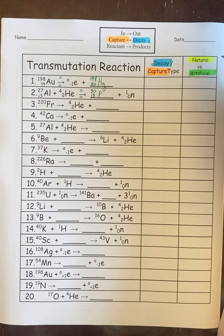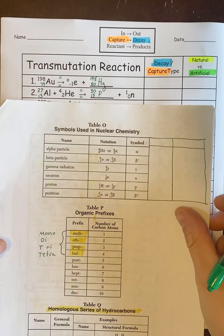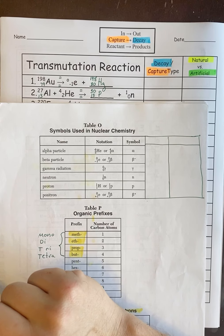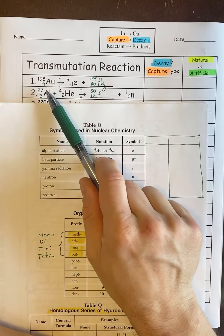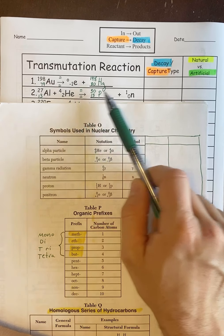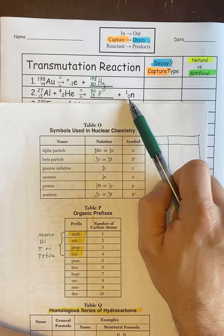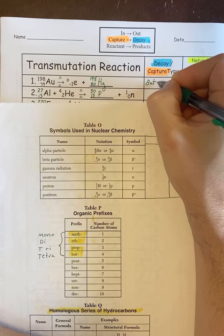Now the next thing you're going to do is determine what types of decay or captures they are. The way you do that is by looking at table O. You're going to say, all right, out of these elements, which ones are on table O and those are the ones that you're going to have your capture and decay type. In this case the E is for sure, the HE is on table O and the N is on table O. So the E is a beta, the HE is an alpha, and the N is a neutron.